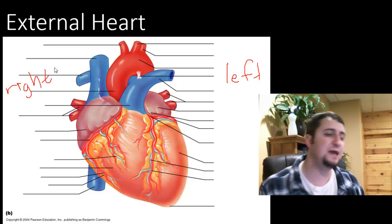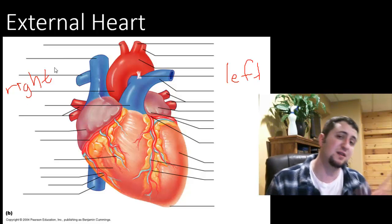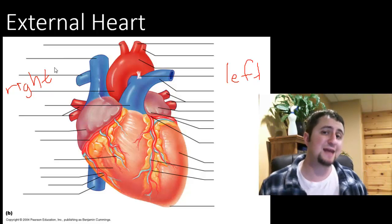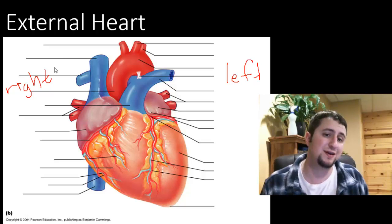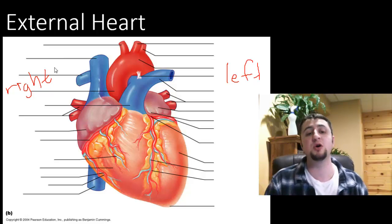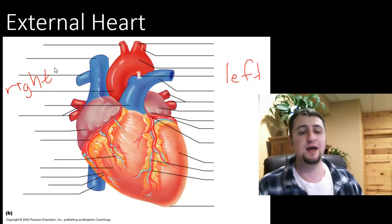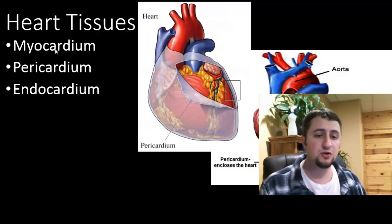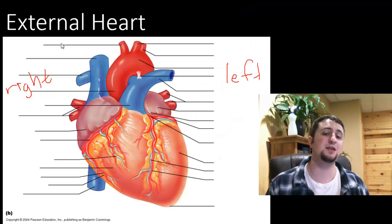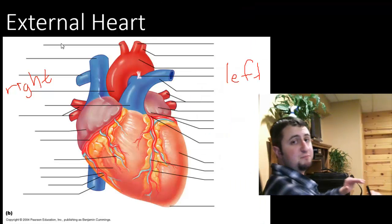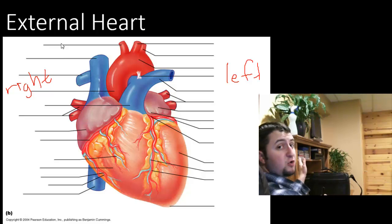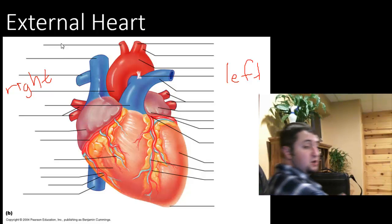You may be wondering: why is the right on the left and the left on the right? Well, when we talk about the anatomy of the heart, we are actually talking about it as if it was inside the person themselves. And so what you're seeing here is actually the front side of the heart. So it would be as if my heart is in my body this way, the left over here and the right over here.